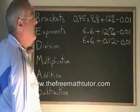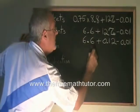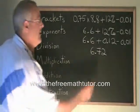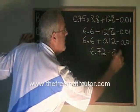6.6 plus 0.12 is equal to 6.72. And I copied down the rest of the problem. Minus 0.01.